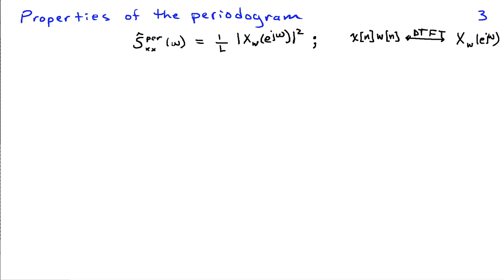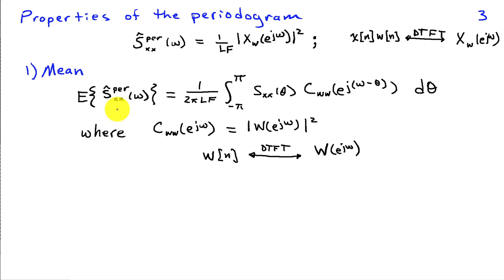We would like to know whether this estimate is a good estimator or what its qualities are, so we're going to look at the properties of the periodogram. These have been analyzed, and we'll present the results rather than go through the details. We define our periodogram estimate as 1 over L times the magnitude squared of X_w of e to the j omega, where X_w of e to the j omega is the discrete time Fourier transform of the windowed length L time series x of n. We can look at the mean of this estimate — in other words, if we draw many different random time series x of n, on average, what does this estimator look like?